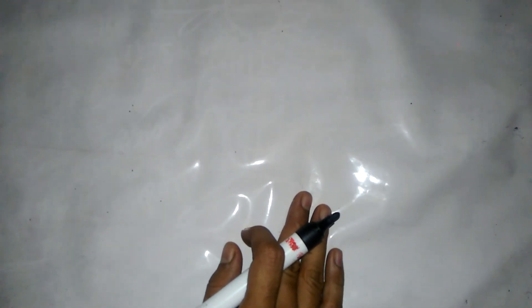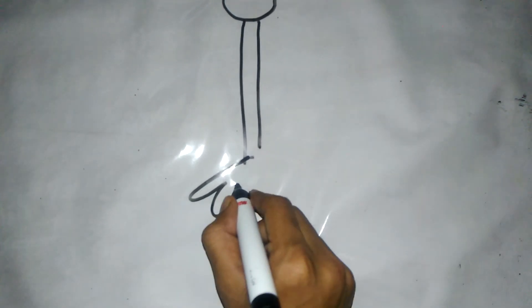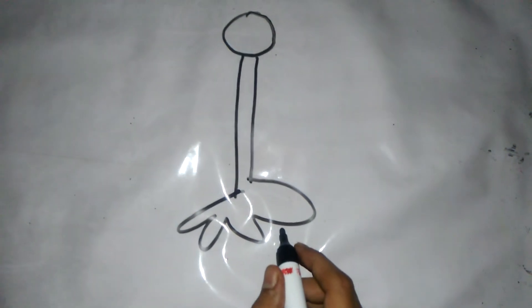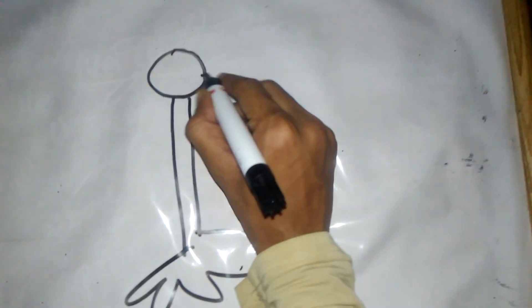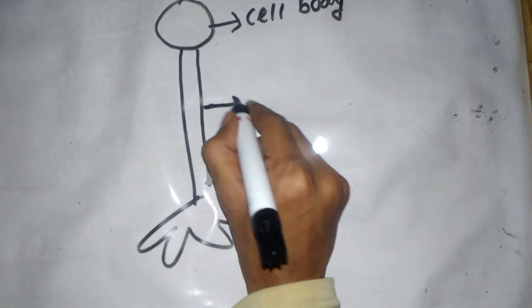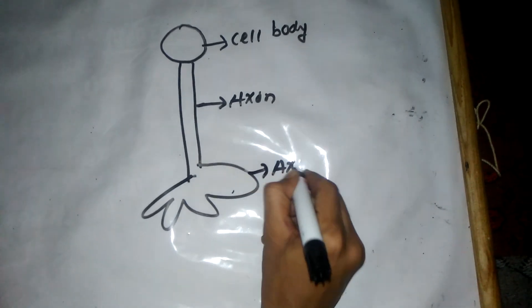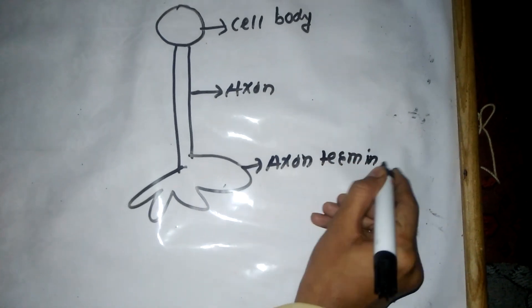Hello friends, in my previous video I discussed the classification of the nervous system. In this video I will discuss the neuron. This is the cell body of a neuron, this is the axon of the neuron, and this is the axon terminal of the neuron. We can name these three parts: cell body, axon, and axon terminal.